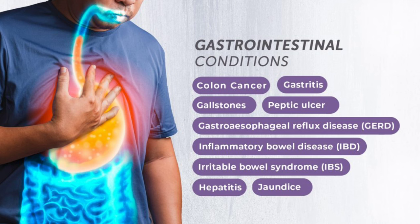Recap: autoimmune hepatitis — abnormal LFTs, secondary amenorrhea, and association with autoimmune diseases (vitiligo, Addison's, hypothyroidism, diabetes mellitus). Alcoholic liver disease — heavy alcohol consumption history, signs of chronic liver disease, AST double the value of ALT, and positive GGT. Management: advise alcohol cessation and consider liver transplant after six months of stopping alcohol.